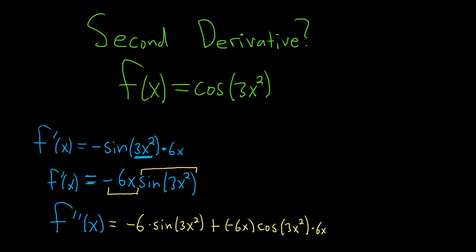Let me go over that one more time and write the formula here. If you have f times g — your first function and your second function — and you take the derivative, it's the derivative of the first times the second, plus the first times the derivative of the second.